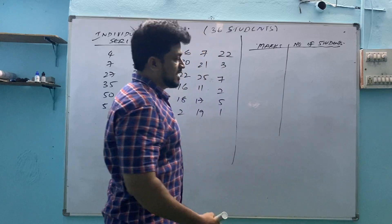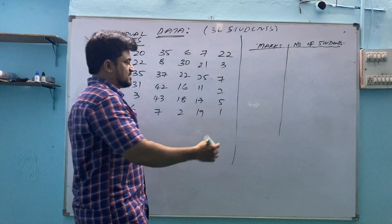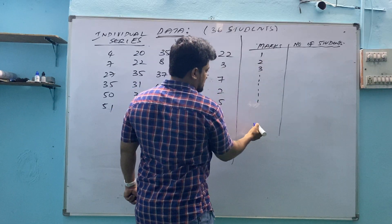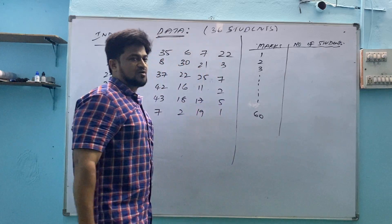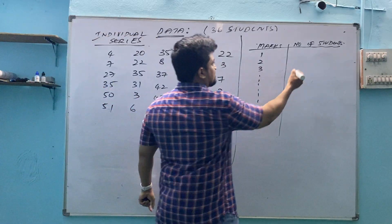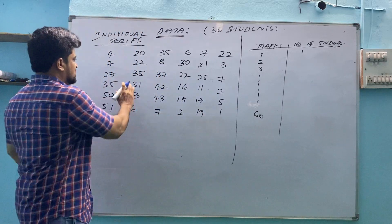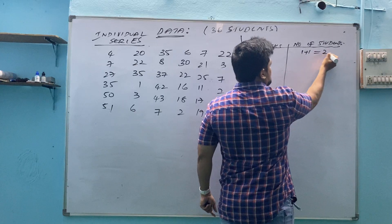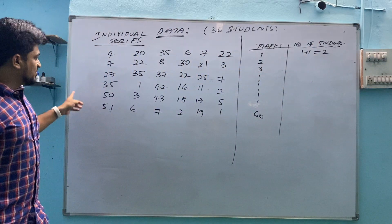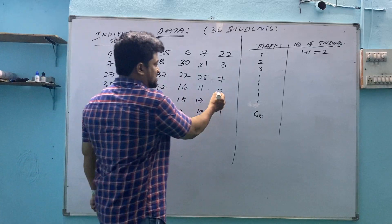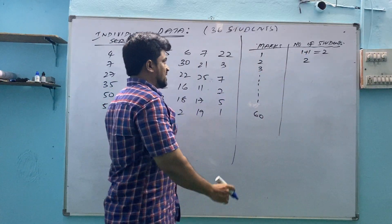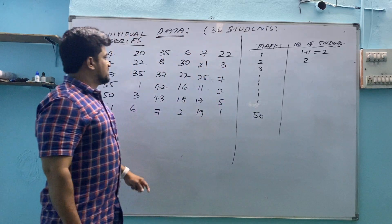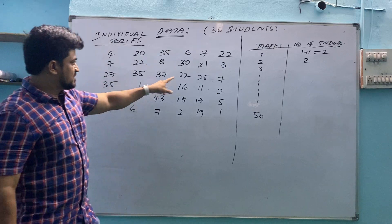Alternatively, I can write Marks and Number of Students in a table. I will write marks 1, 2, 3 and so on up to 60. How many students got 1 mark? Suppose 2 members. How many got 2 marks? 1 person. How many got 3 marks? 2 members. In this way, I count the frequency for each mark value up to 50.